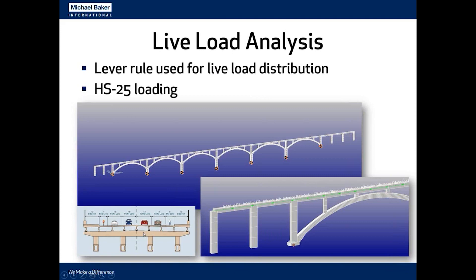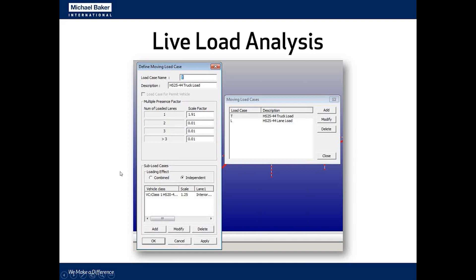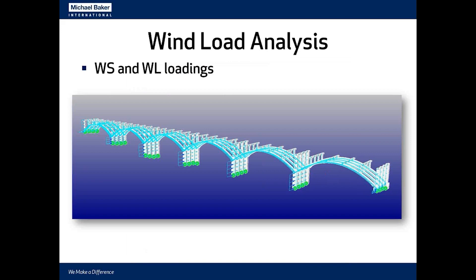For the live load analysis, we used the lever rule to determine distribution factors for how much superstructure live load each arch rib sees. As prescribed by the client, we used HS25 loading with the lever rule to perform a 2D analysis for live load, defining a line lane over the length of the superstructure. We set up an HS20 truck — a preset vehicle in MIDAS — scaled up by 1.25 for HS25, then applied a manual scale factor of 1.91, which is the distribution factor obtained from the lever rule.